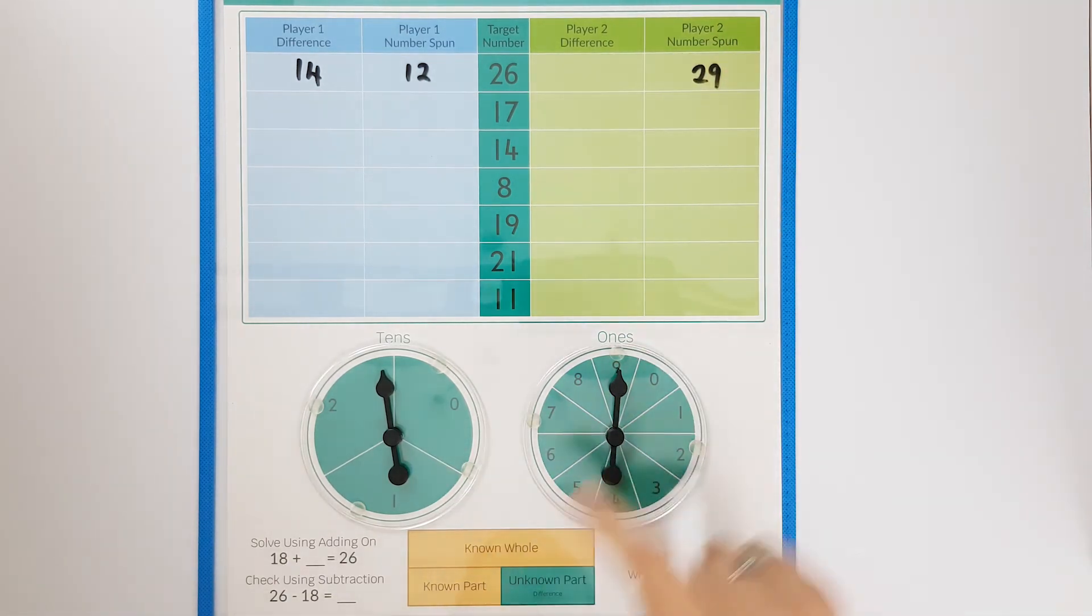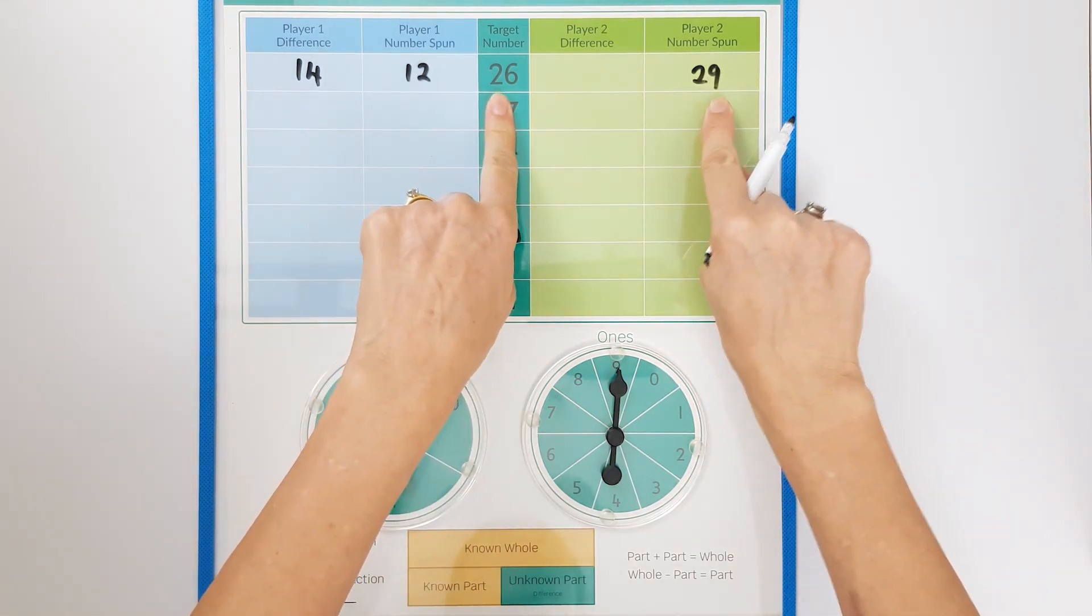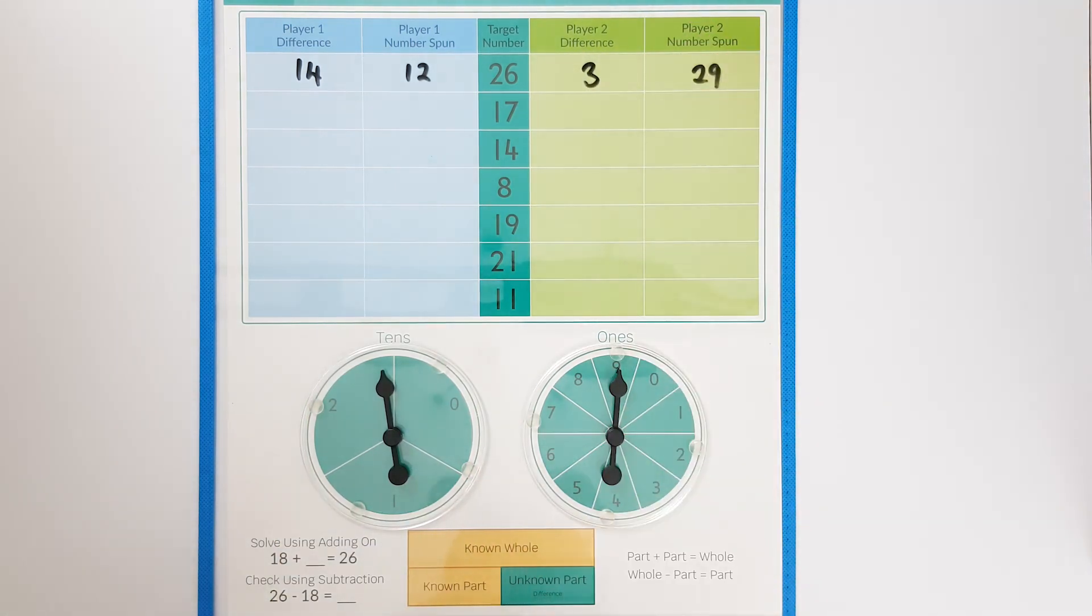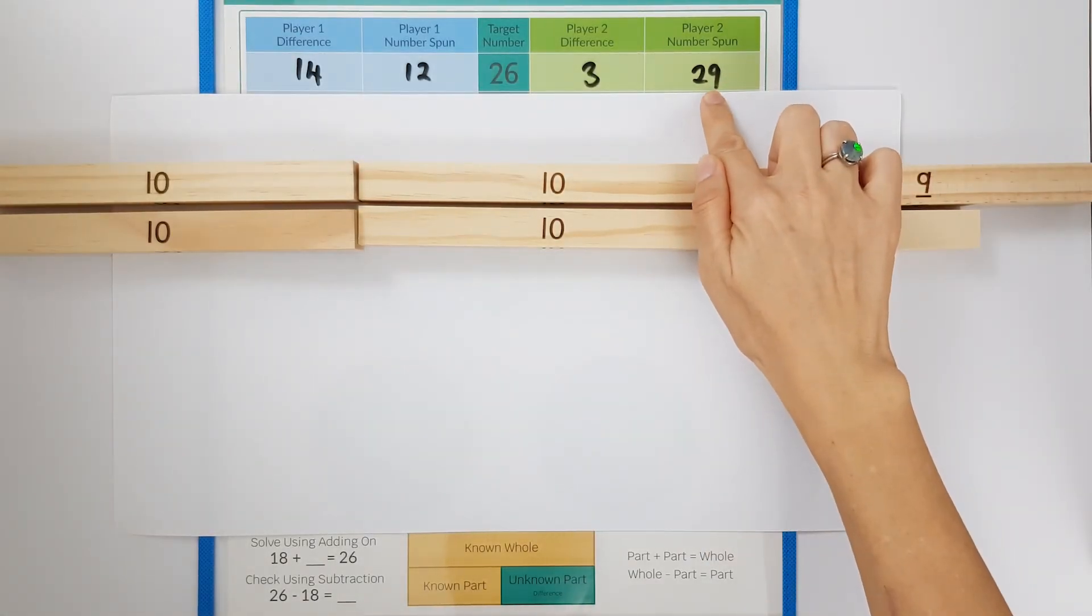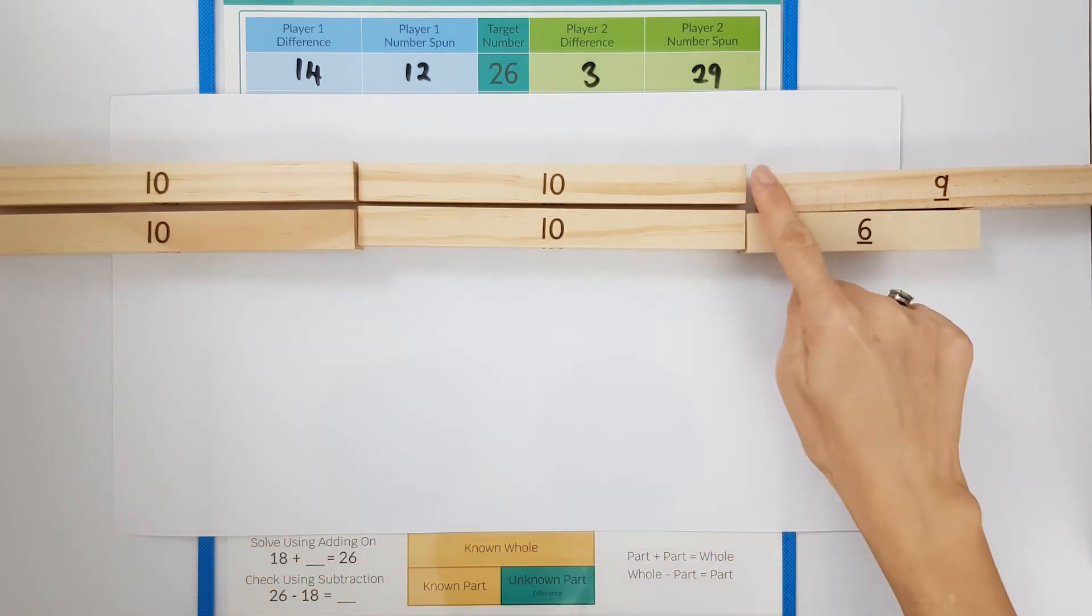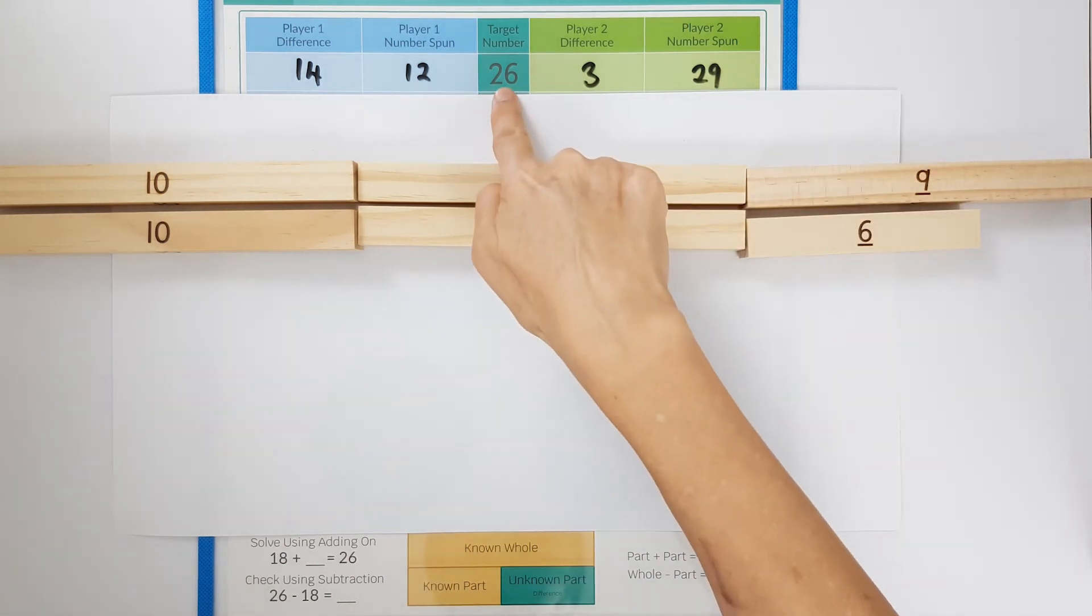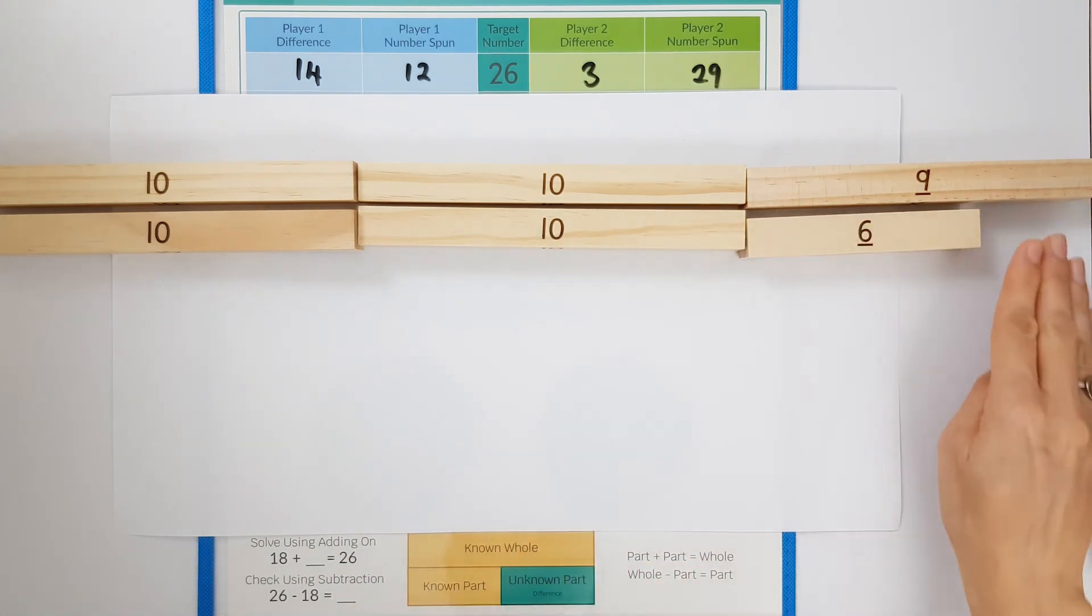They now have to work out the difference between these two numbers which is three. I'm going to model this with bond blocks. In this example the twenty nine is the larger set or represents the known whole. The target number of twenty six is the smaller set or the part we knew. The difference between the two is the part of three.